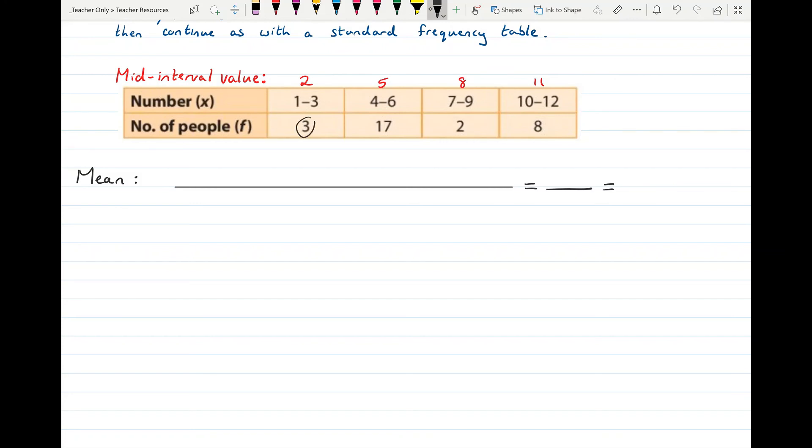So it was 3 and we're going to use 2 as our interval value. So it's going to be 3 times 2 plus 17 times 5 plus 2 times 8 plus 8 times 11.